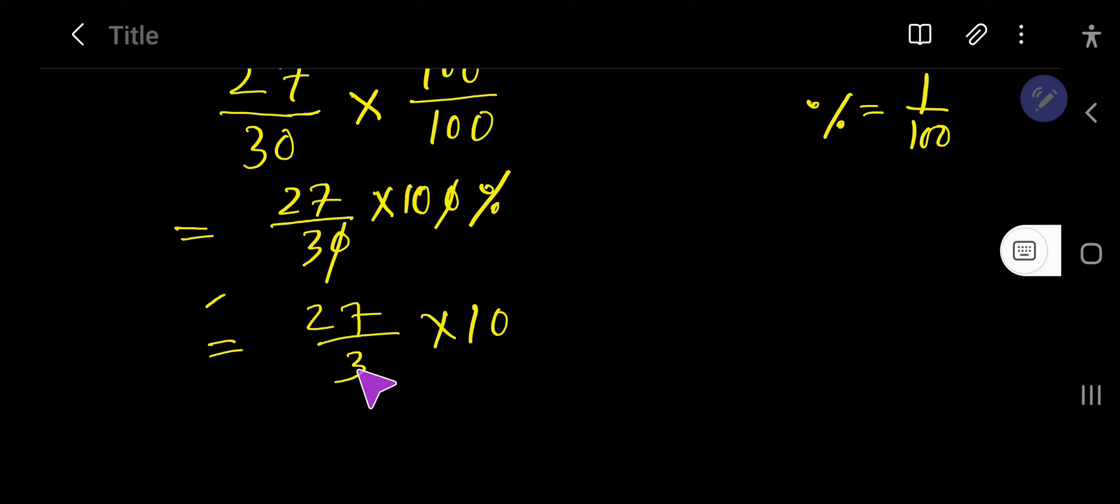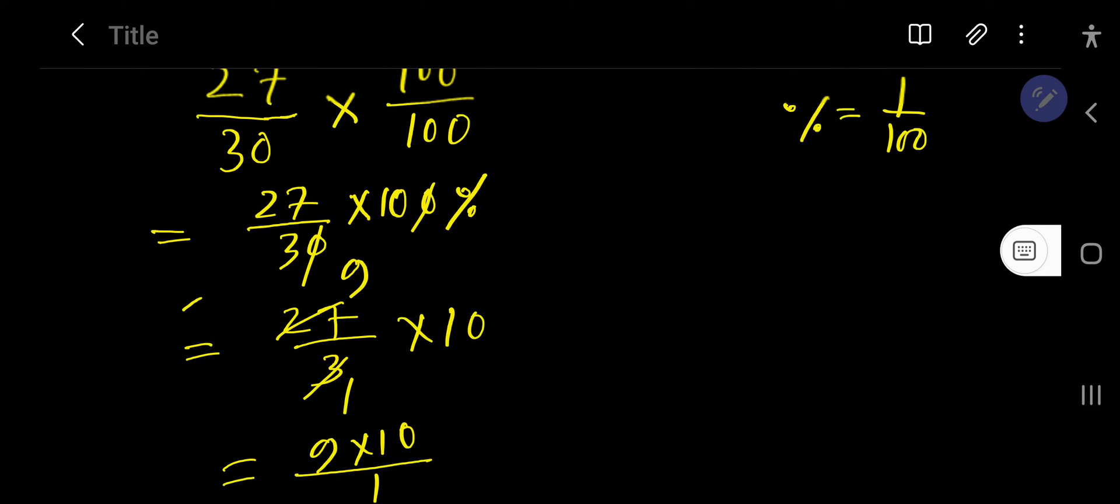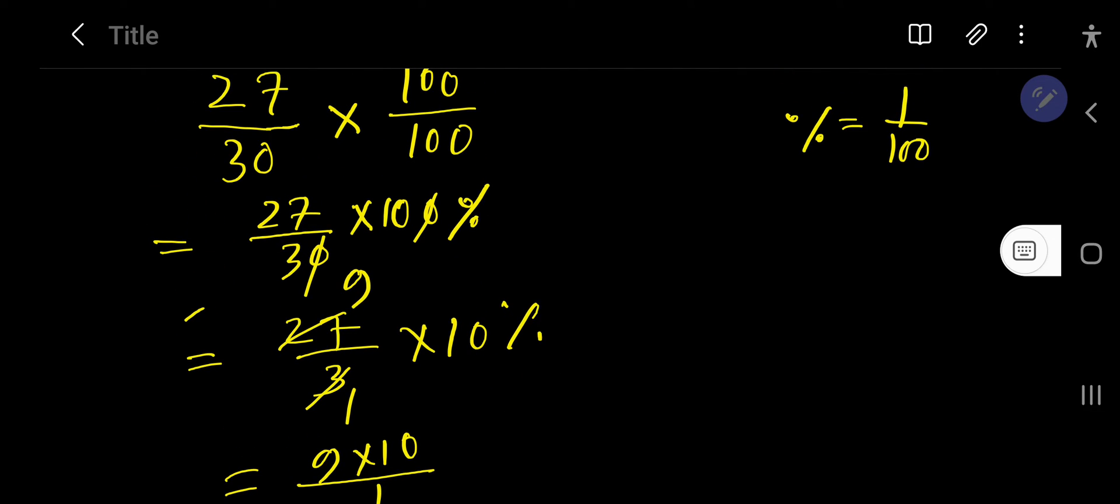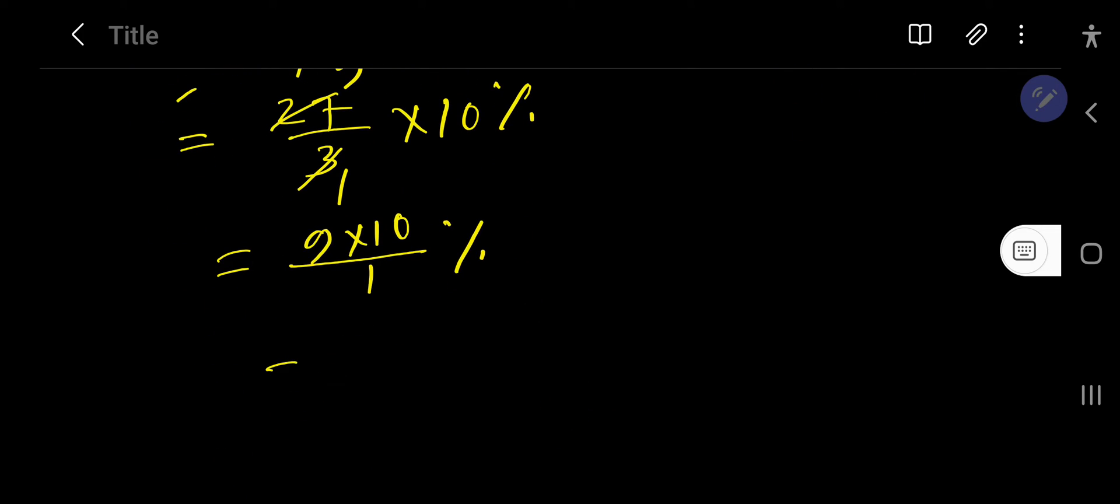If you divide this 3 by 3, you will get 1. And if you divide this 27 by 3, you will get 9. So basically you are getting 9 times 10 divided by 1. And you need to write percentage also. So you are getting 90 percent.